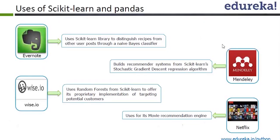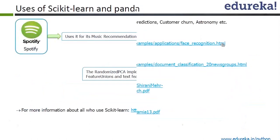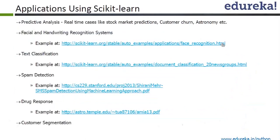Evernote, Netflix, Mendeley, Wise, Spotify — many companies are using scikit-learn. There are many more companies; we have just listed a few. Let's talk about application. It's not the companies that we are worried about — it's the application that we care about. Application of scikit-learn: it's used for predictive analysis. Real-time cases like stock market prediction, customer churn, astronomy, etc. are done using scikit-learn. Basically, all machine learning problems can be solved through scikit-learn, and there are many more algorithms in scikit-learn than Mahout.